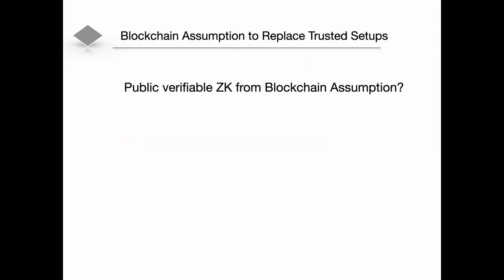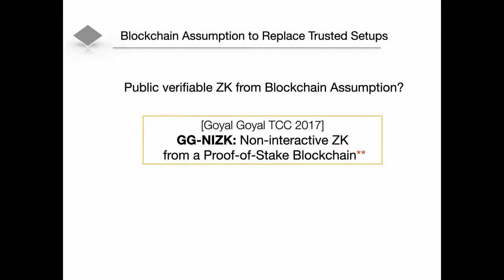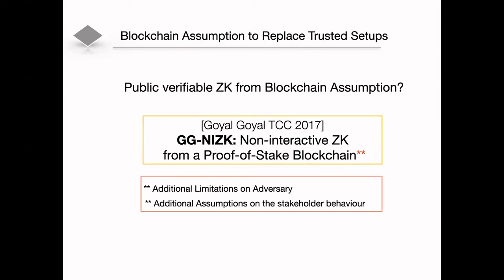This question was already asked by Goyal and Goyal in 2017, and they give an affirmative answer. They construct a non-interactive zero-knowledge proof system from a proof-of-stake blockchain. However, they make some limitations: they require that adversaries cannot corrupt players adaptively, and some assumptions on the stakeholders' behavior are also made.